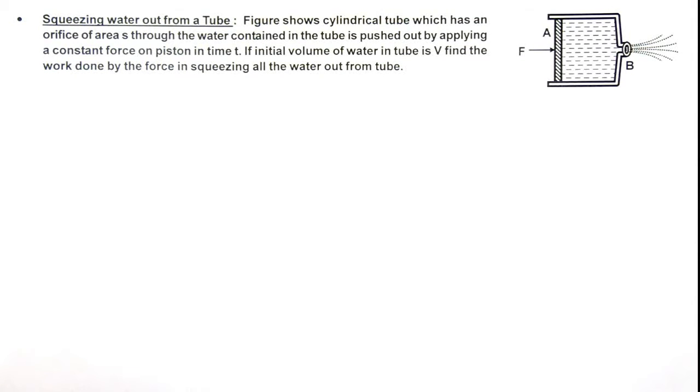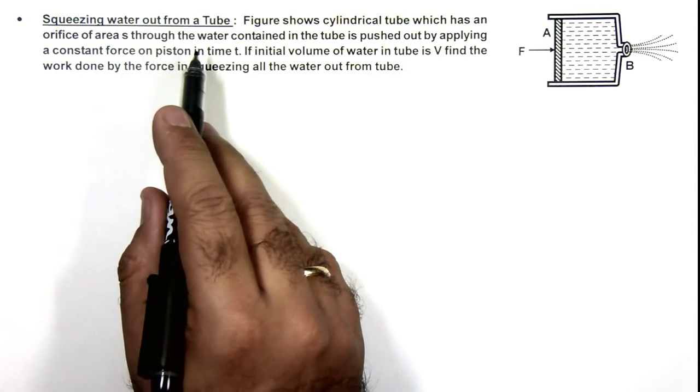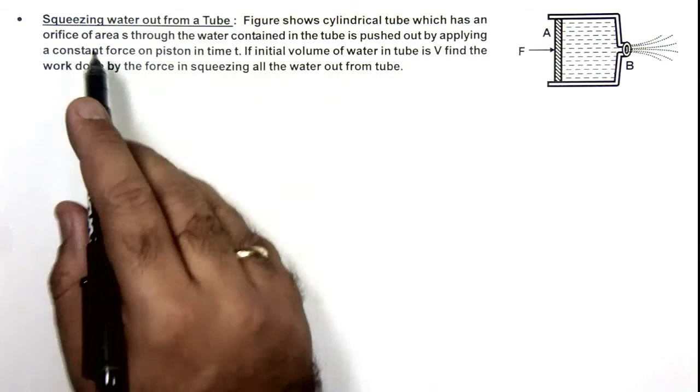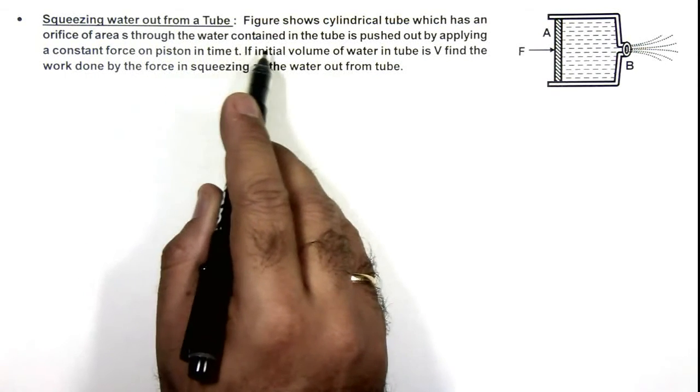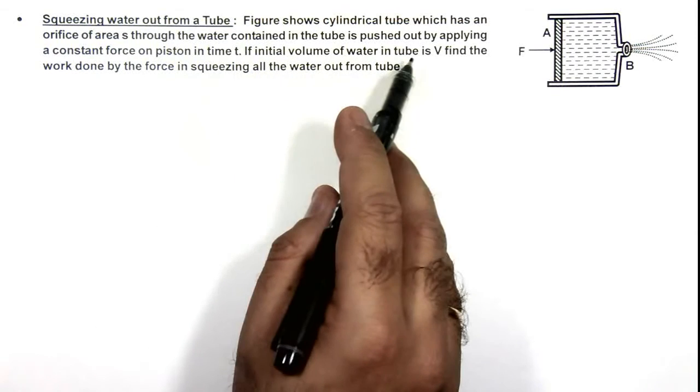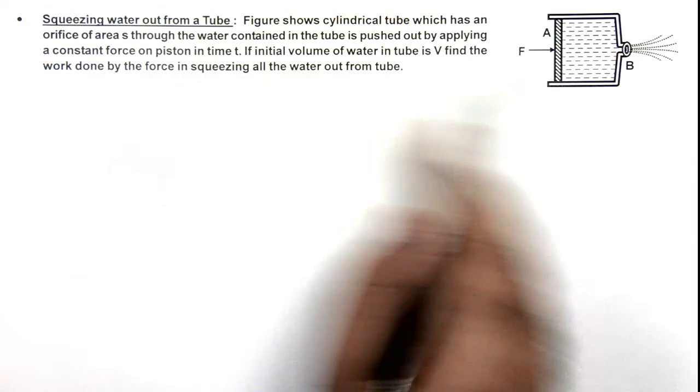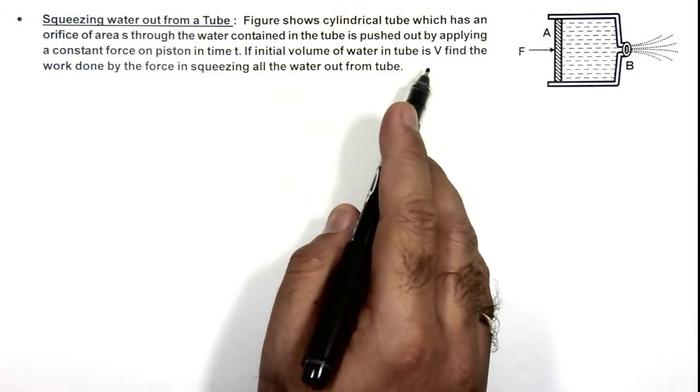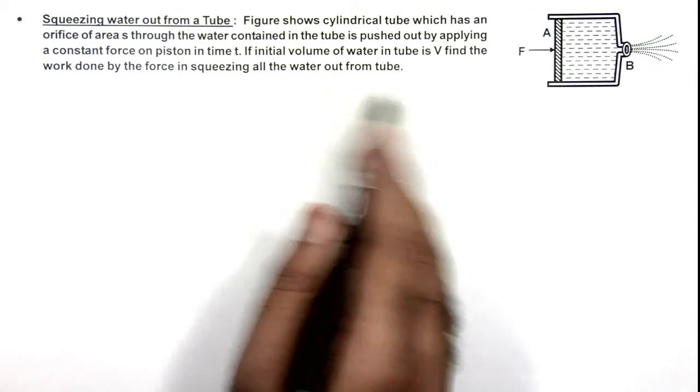In this illustration, we'll analyze a case of squeezing water out from a tube. The figure shows a cylindrical tube which has an orifice of area s, through which the water contained in the tube is pushed out by applying a constant force on the piston in time t. If the initial volume of water in the tube is V, we need to find the work done by the force in squeezing all the water out from the tube.